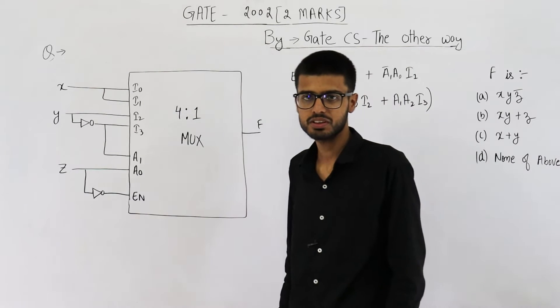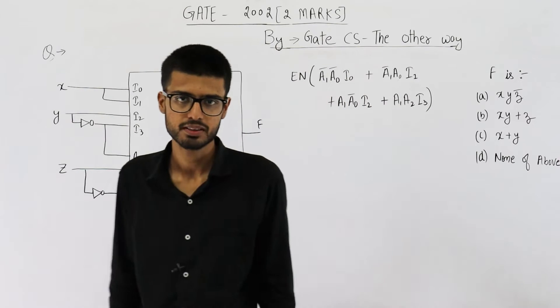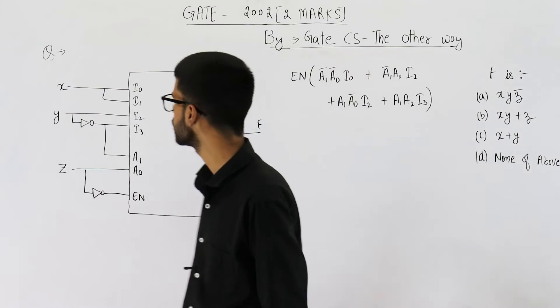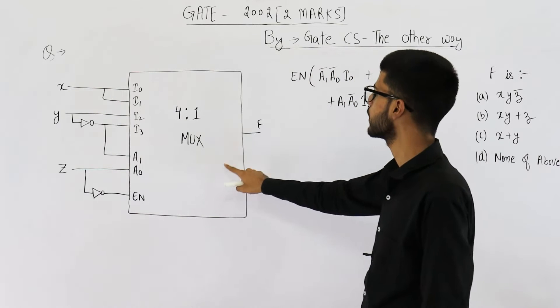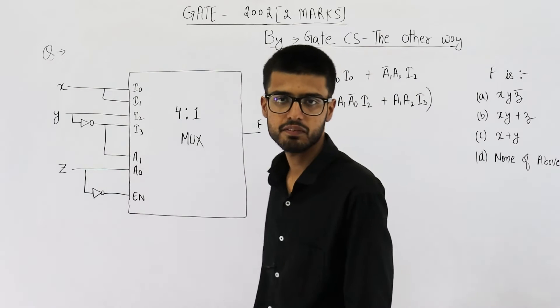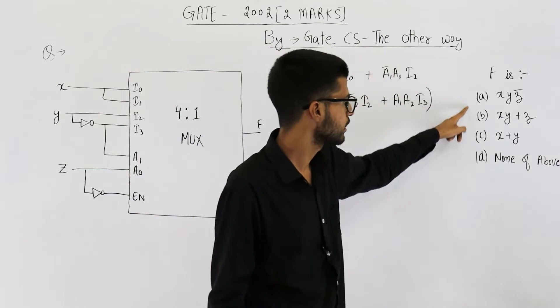Hello students, welcome back. This question is from GATE 2010 exam. It is for two marks. They have given you this circuit and they're asking what is this output F. Also, you have these four options. I've noted them now.